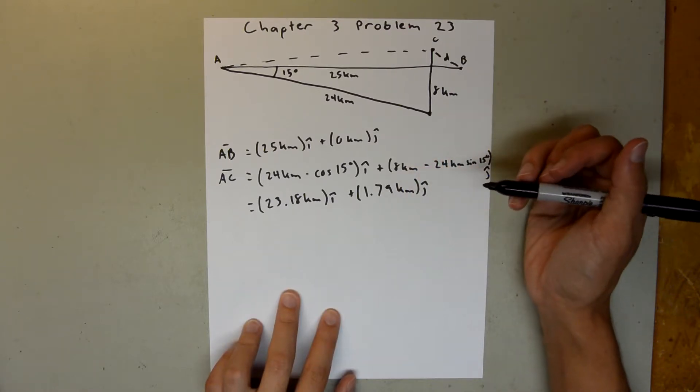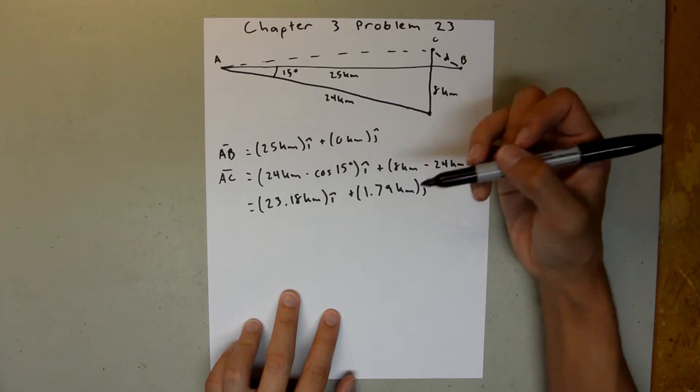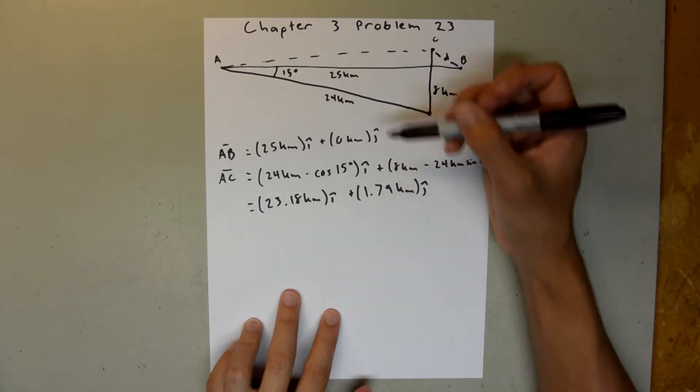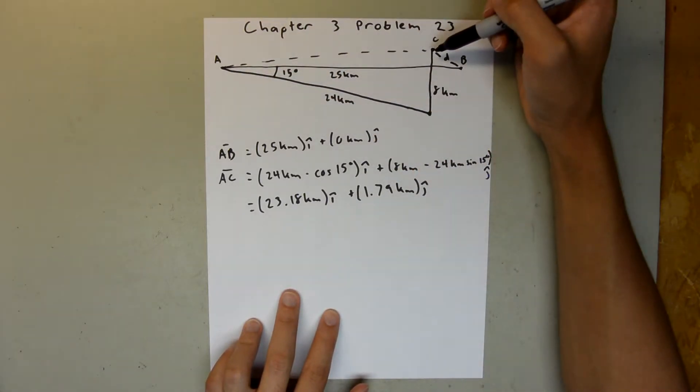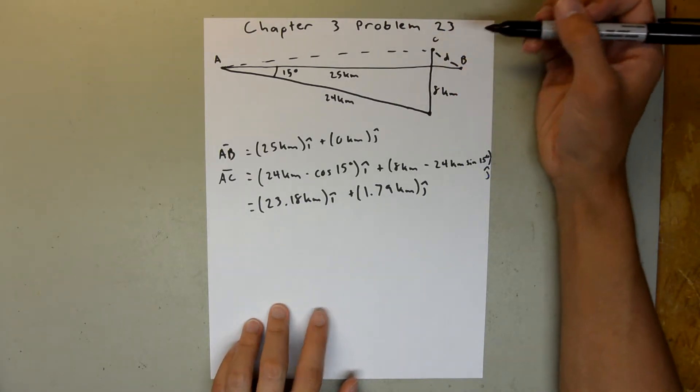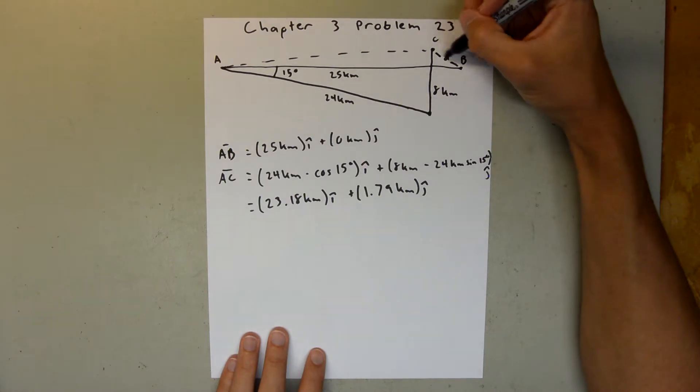And now looking at this vector, we can see that our X component and our Y component are both positive, and with this vector we drew up here, our X and Y component are both positive, so we know that our drawing and our calculations match our expectations.